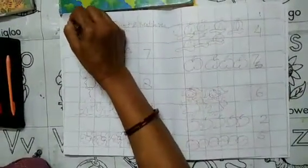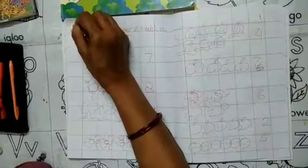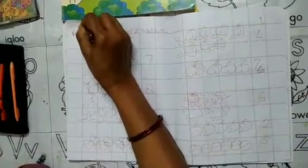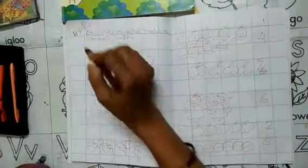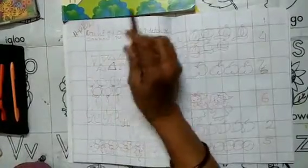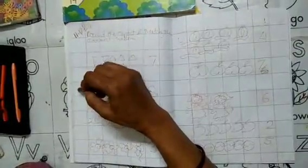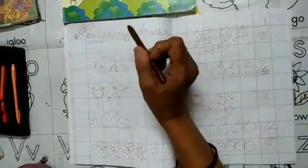Today is date 11, month 12, year 2020. Day Friday. Tomorrow Saturday. Today Friday. Yesterday Thursday.